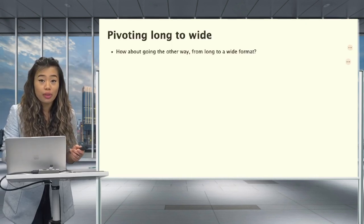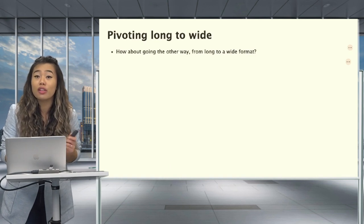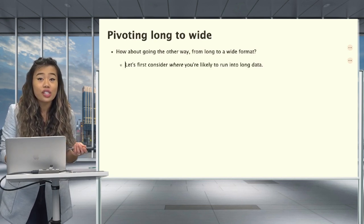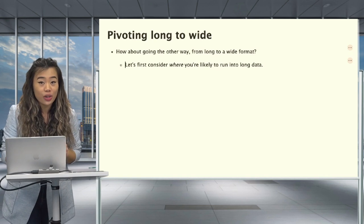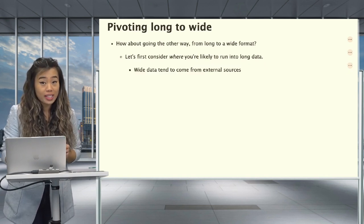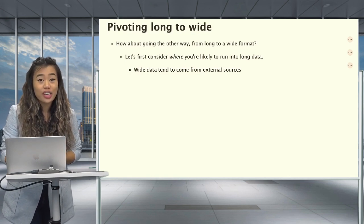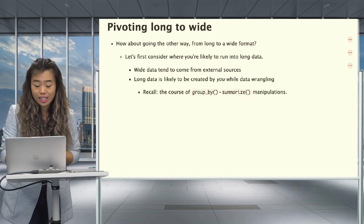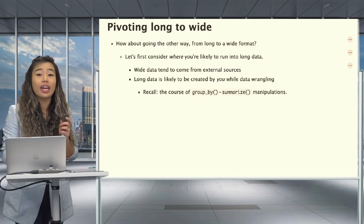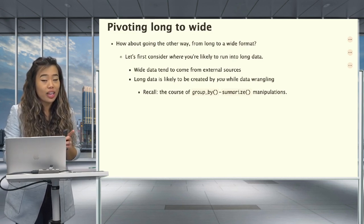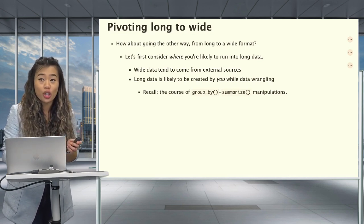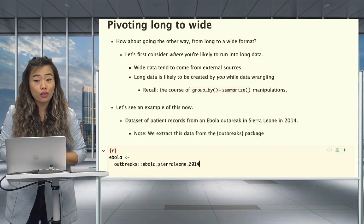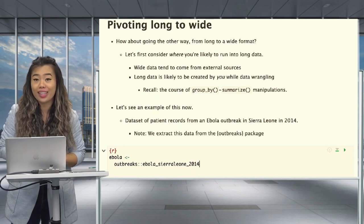So now we've gone over how to pivot from wide to long data formats using the pivot_longer function. But before completely switching gears and learning how to pivot data the other way around, let's first consider in which instances you're likely to encounter data in a long format. Wide data tends to come from external sources such as Gapminder and Eurostat. In comparison, long data is likely to be created by you whilst data wrangling.